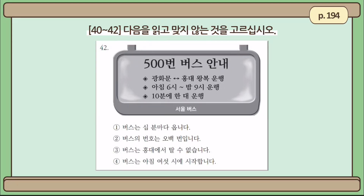Question number 42. 500번 버스 안내 — information about bus line number 500. One bus leaving every 10 minutes. Number 1: 버스는 10분마다 옵니다 — the bus comes every 10 minutes. Yes, it says 10분에 한 대 운행. Number 2: 버스의 번호는 500번입니다 — the bus line number is 500. Yes, it's clearly stated that this information is about the 500번 버스.